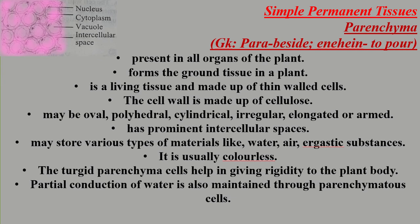The shape of parenchyma cells may be oval, polyhedral, cylindrical, irregular, or elongated, and they have intercellular spaces. Intercellular space is the space found between two cells. Parenchyma cells may store various materials like water, air, and ergastic substances, and are usually colorless.